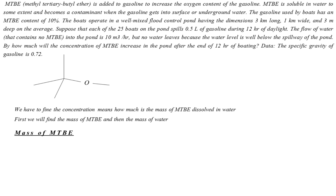We know that one boat consumes 0.5 liters of gasoline. With 25 boats, the total amount consumed is 25 × 0.5 = 12.5 liters. To convert to cm³, we use the conversion factor: 1000 cm³ = 1 liter. So we have 12,500 cm³ of gasoline consumed by all 25 boats during the 12-hour boating period.